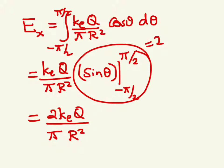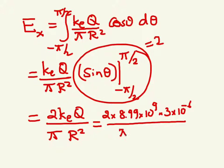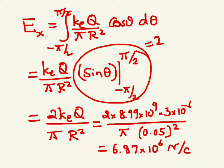Or if you substitute all the numbers that are given to us, it ends up being two times 8.99 times 10 to the 9 newton meter squared per coulomb squared times the total Q, which was given to be 3 microcoulombs. 3 microcoulombs divided by pi times R squared, and the radius was given to be 5 centimeters, so it's 0.05 meters squared. Okay? So if you calculate this, the electric field comes out to be 6.87 times 10 to the 6 newtons per coulomb.